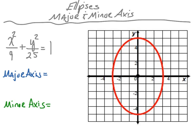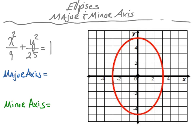You'll notice that this ellipse has two different axes of symmetry. We can cut this ellipse in half vertically — that would be one line of symmetry — but we could also cut it horizontally, and that would also be a line of symmetry. So we have two lines of symmetry: one is called the major and one is called the minor. The major is the longer of the two, and this shorter one is called the minor axis of symmetry.